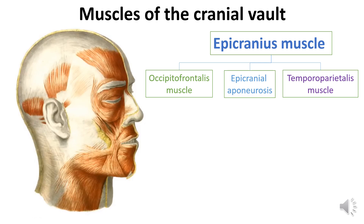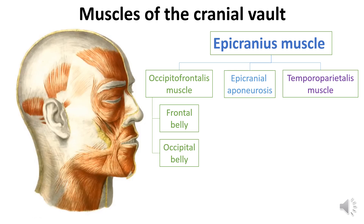The occipitofrontalis muscle consists of the frontal and occipital parts, which are connected to each other by means of the epicranial aponeurosis, which looks like a strong fibrous plate. The frontal belly begins from the epicranial aponeurosis and is woven into the skin of the eyebrows. The occipital belly begins at the superior nuchal line at the base of the mastoid process and ends in the epicranial aponeurosis.